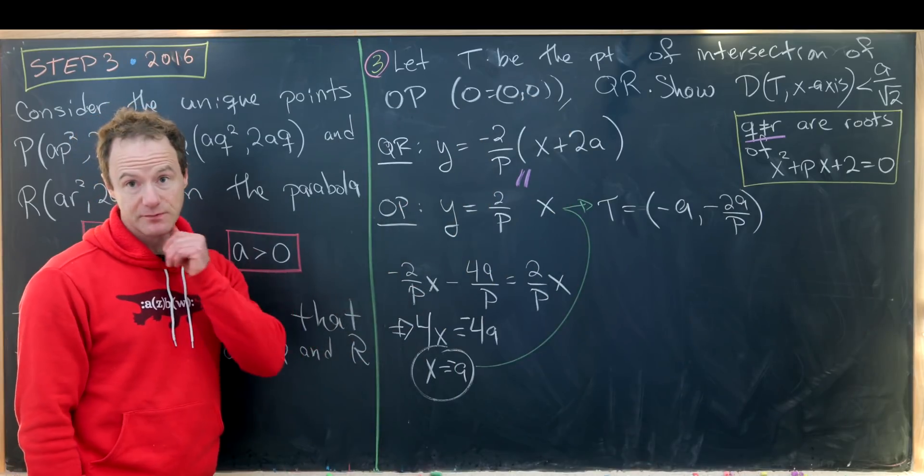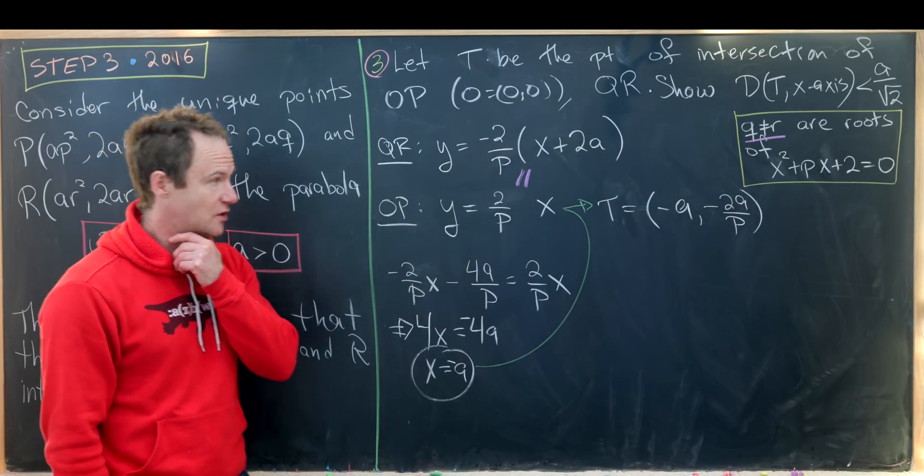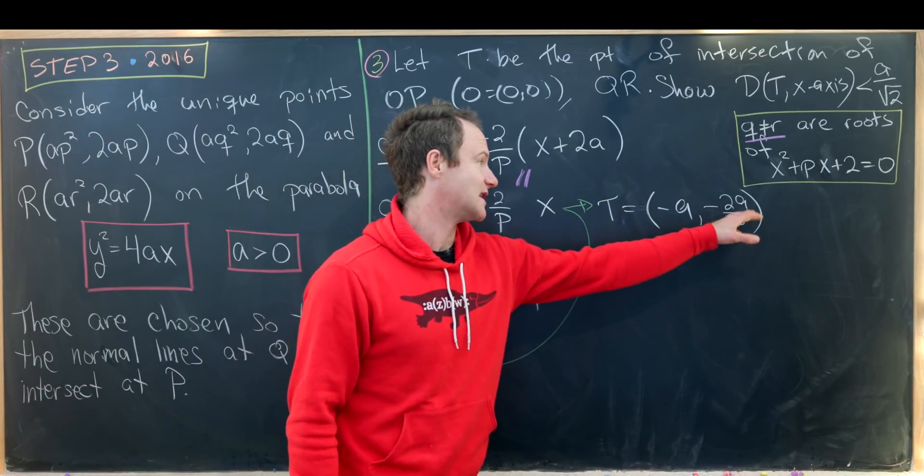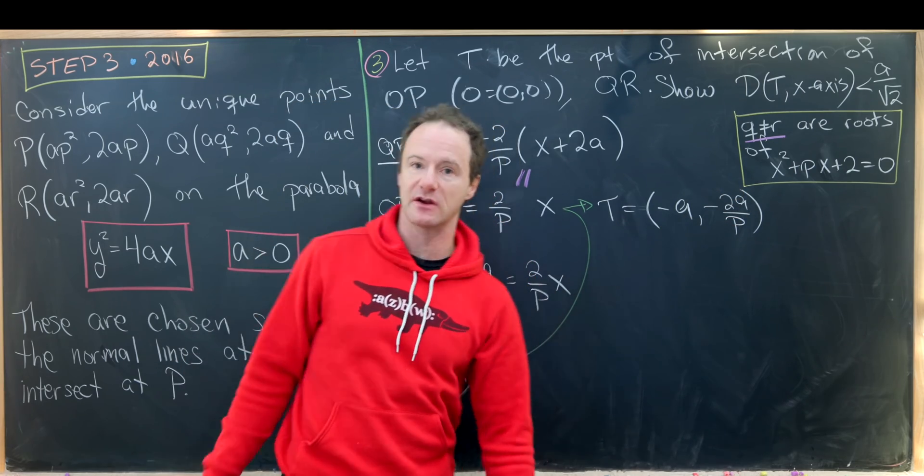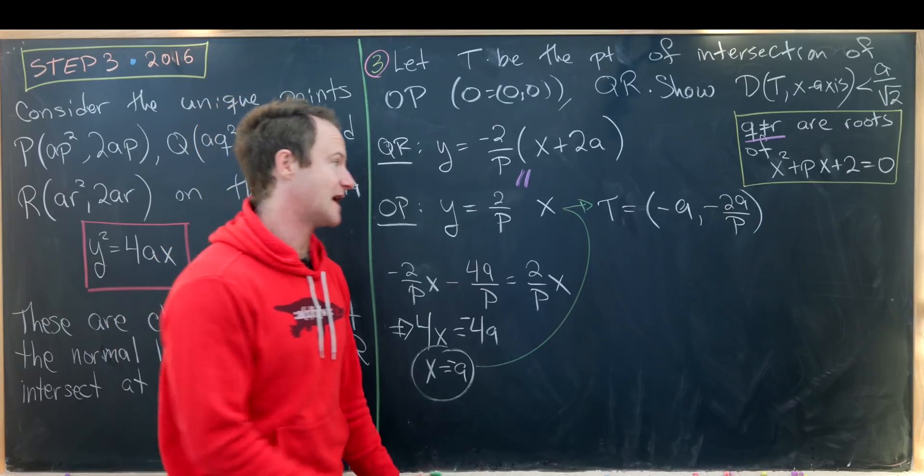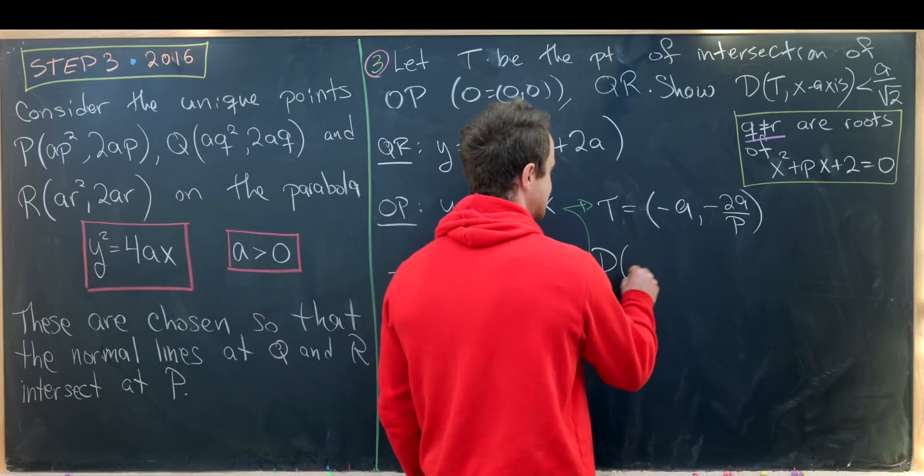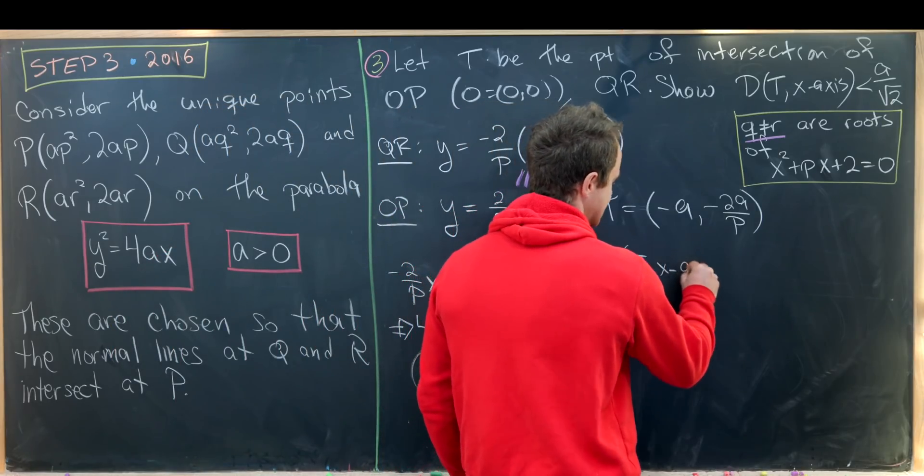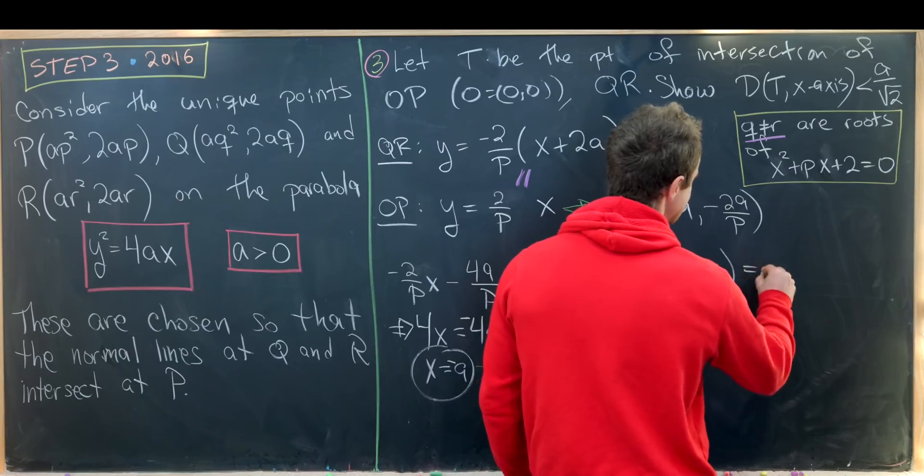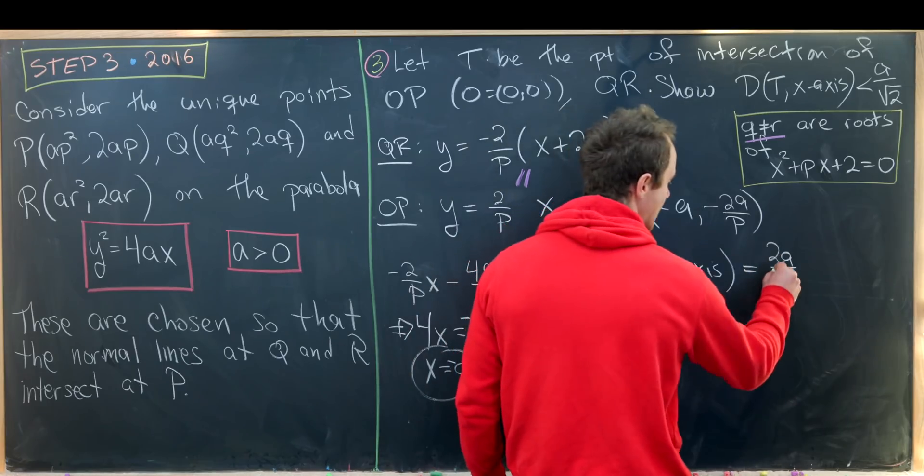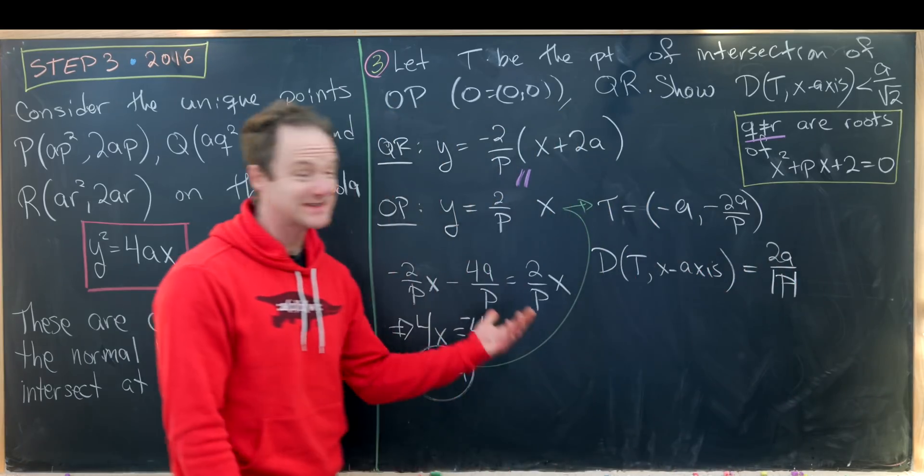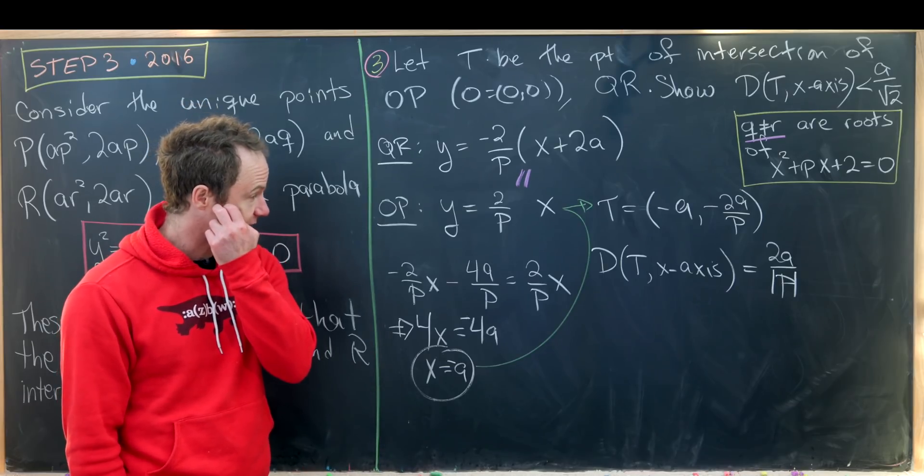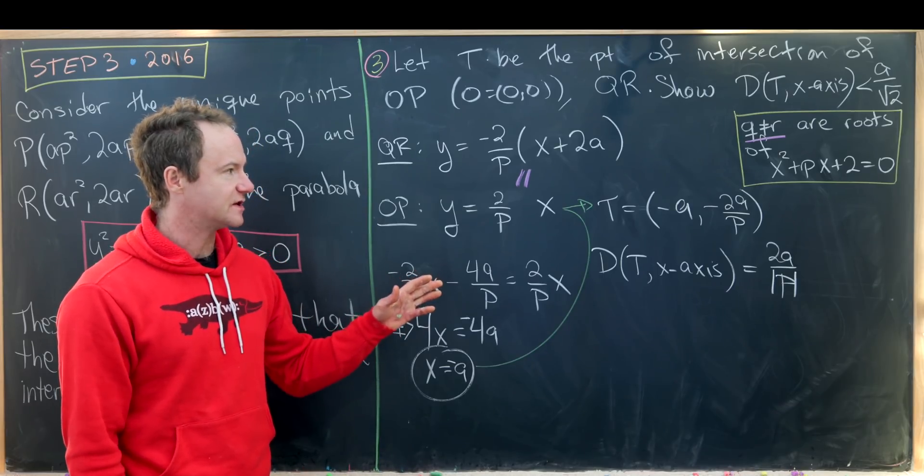But now the distance from this point to the X axis will just be the size of this Y coordinate. Given that A is bigger than zero that just means we get rid of the minus sign. So we've got distance of T to X axis is equal to 2A/|P|. Because a priori we don't know if P is positive or negative.